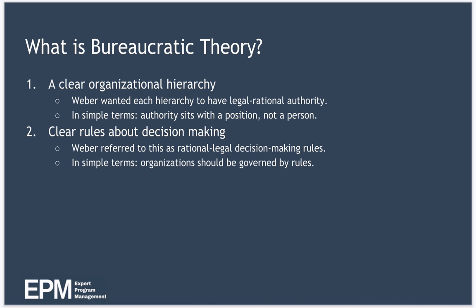The second part of Weber's theory is clear rules for decision making. Weber referred to this as rational legal decision making rules, which simply means that there should be a set of explicit rules and procedures defining how the organisation functions, and that these rules should be consistent with the rules and laws of wider society.